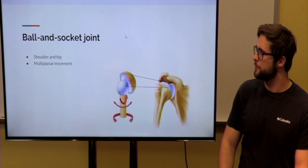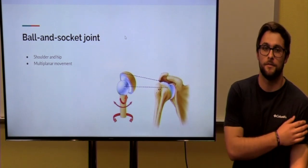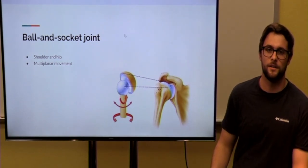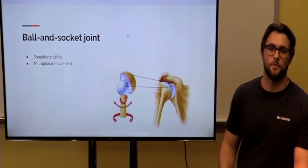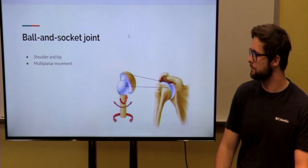In your ball and socket joint, this is going to be your shoulder and hip. They have multi-planar movement, meaning that they can move on more than one plane.